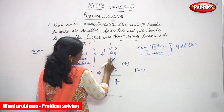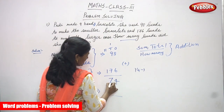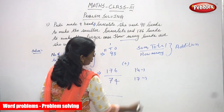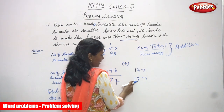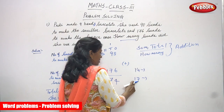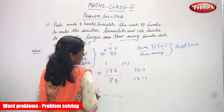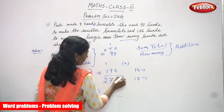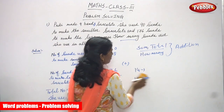The carry-over 1 goes to the tens place. So 1 plus 9 is 10, and 10 plus 7 is 17. So I write 7 in the tens place. 17 means 7 tens and 1 hundred, so the 1 hundred is carried over to the hundreds place. Then 1 plus 1 equals 2. The answer is 274.